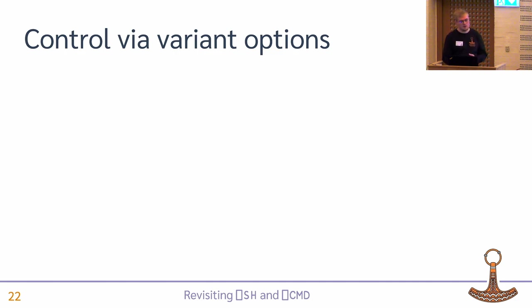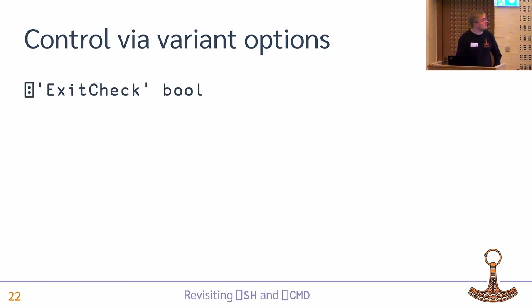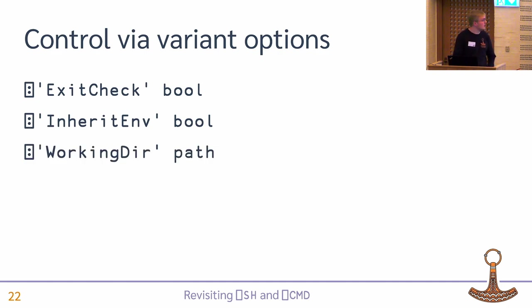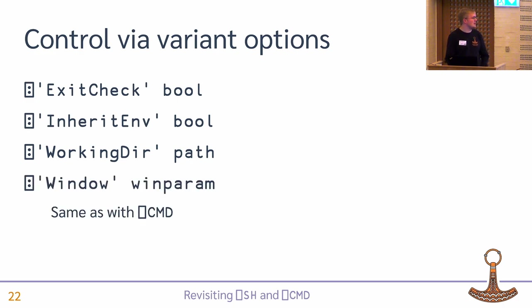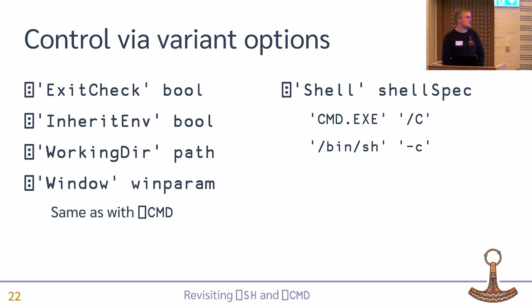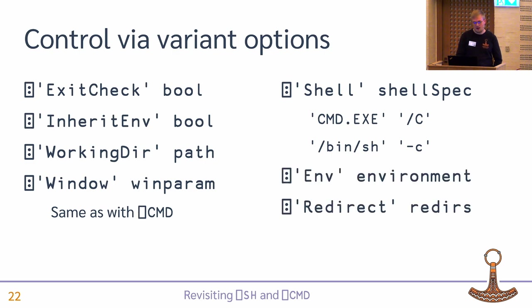All the stuff we talked about — environment variables and so on — we need a way to control that, and that will be via variant options. I want to be able to just get the return code, but some users might still want a domain error on non-zero exit. Then an option to inherit or clear the environment variables, an option to set the current working directory, which is often very useful. By default we're using cmd.exe on Windows to run the character vector string, and bin/sh on Unix systems, but you might want to use PowerShell on Windows or bash on Linux, so you can specify that. And then we have two options for environment variables and for redirections.